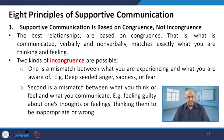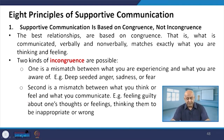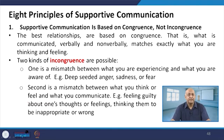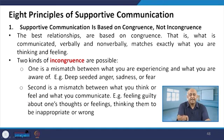Two kinds of incongruence are possible. One is a mismatch between what you are experiencing and what you are aware of — there is deep anger, sadness, or fear and then somebody asks if something seems wrong and the person says 'no, I am okay.' That is one type of incongruence. Second is a mismatch between what you think or feel and what you communicate — feeling guilty about one's thoughts or feelings, thinking them to be inappropriate or wrong. In team building and working with our superior, we should have congruence and not incongruence, because any mismatch will affect the interpersonal relationship with your supervisor.